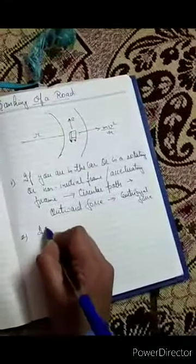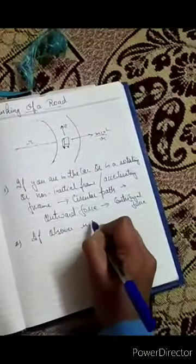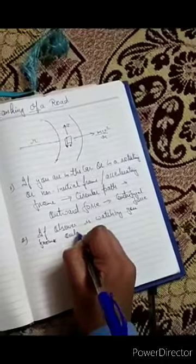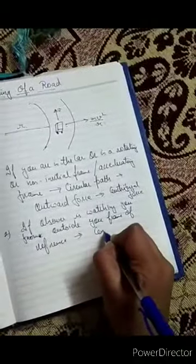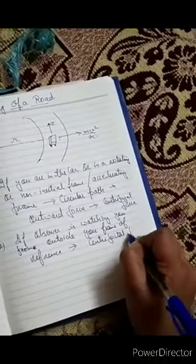Second: if a person is looking at you from outside — an observer outside your frame of reference — that observer thinks that some centripetal force is holding you along this circular path. So it experiences a centripetal force, which of course equals mv²/r, because centrifugal and centripetal are just opposite to each other. Both have the same expression: mv²/r.